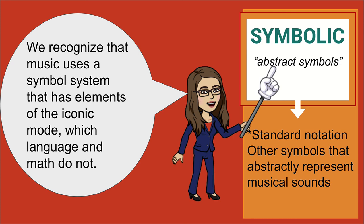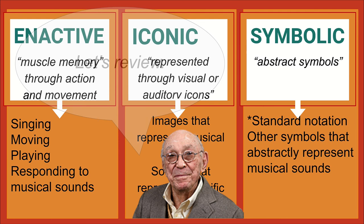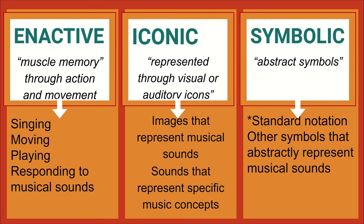Let's review. Bruner's three modes of understanding are enactive, iconic, and symbolic. The enactive mode involves the skills of singing, moving, playing, and responding to musical sounds in a way that demonstrates knowledge of music concepts. The iconic mode is represented through visual and auditory icons — images or sounds used to represent specific music concepts. The symbolic mode involves abstract symbols; in music, we consider all standard notation and other symbols that abstractly represent musical sounds as the symbolic mode of understanding.